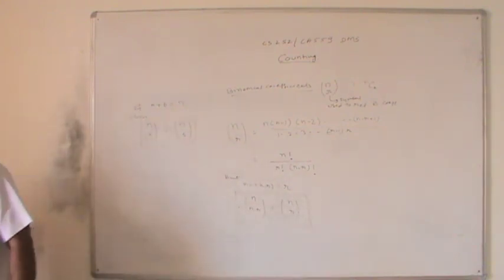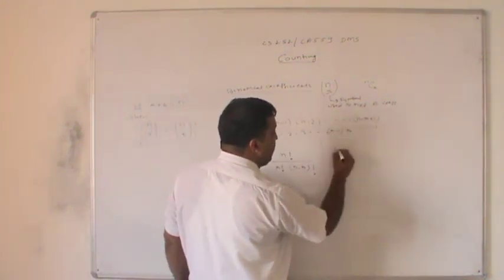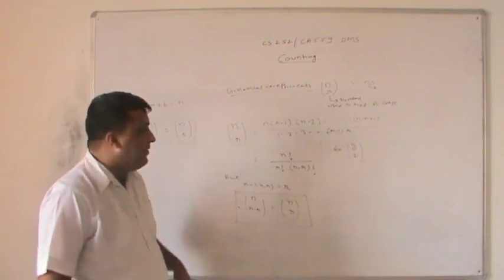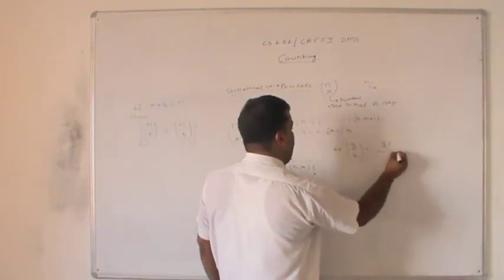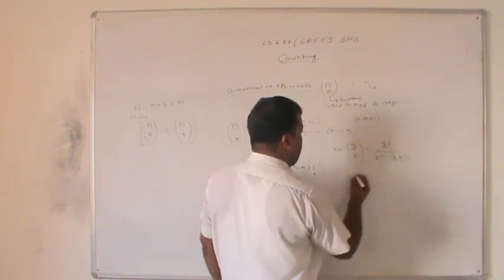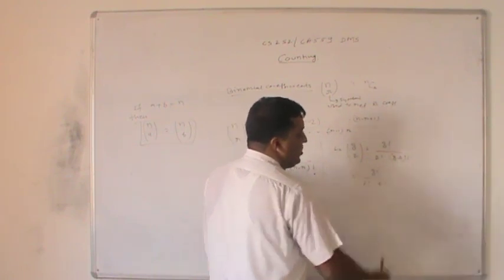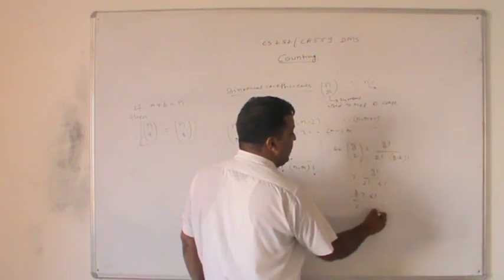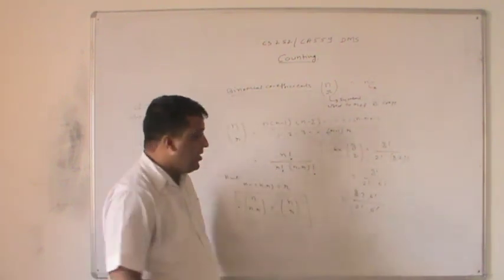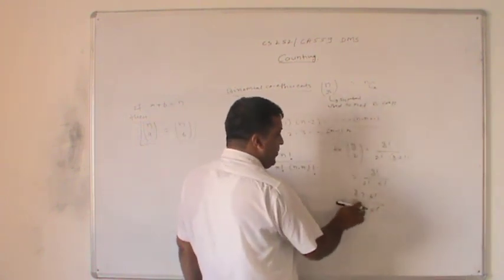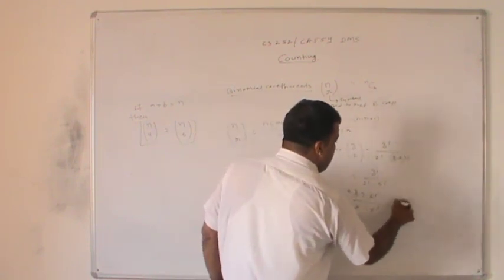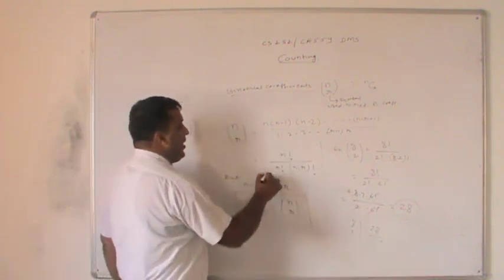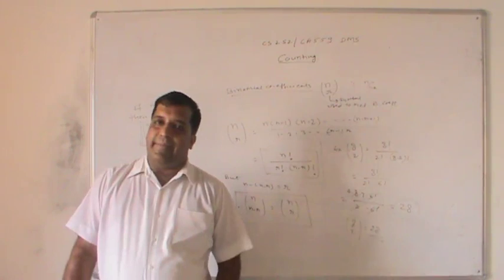Let us find a few examples. C(8, 2) equals 8 factorial upon 2 factorial into 6 factorial, which simplifies to 8 into 7 into 6 factorial upon 2 factorial into 6 factorial. The 6 factorials cancel, giving 8 into 7 divided by 2, which equals 28. Similarly, C(10, 3) equals 10 factorial upon 3 factorial into 7 factorial, which simplifies to 10 into 9 into 8 divided by 3 into 2 into 1, giving 120.